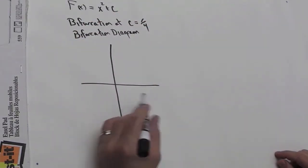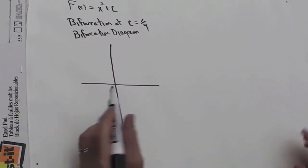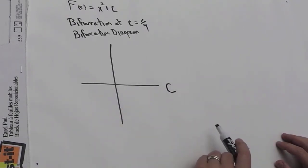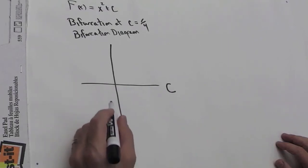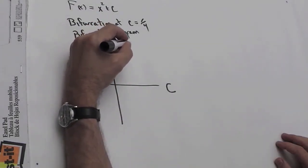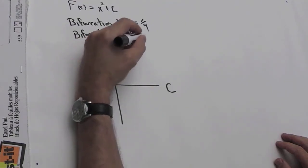Now, the axes of the bifurcation diagram are a little bit strange. The horizontal axis is going to be the value of the parameter c. And the vertical axis is actually going to be the x-coordinates of the fixed points.